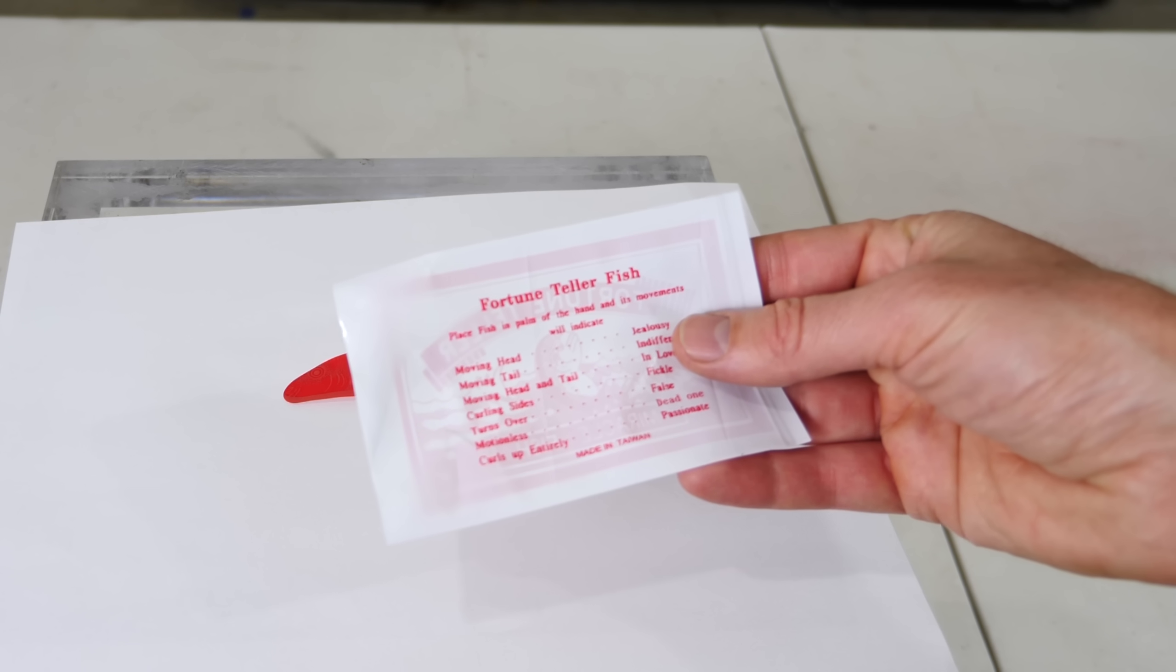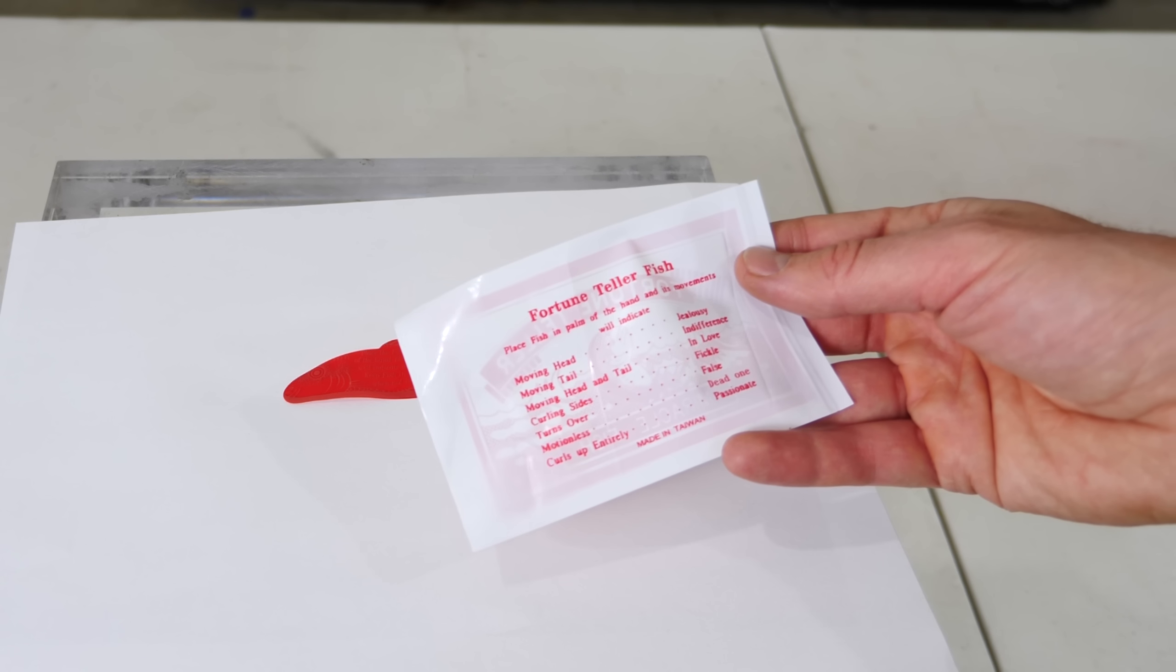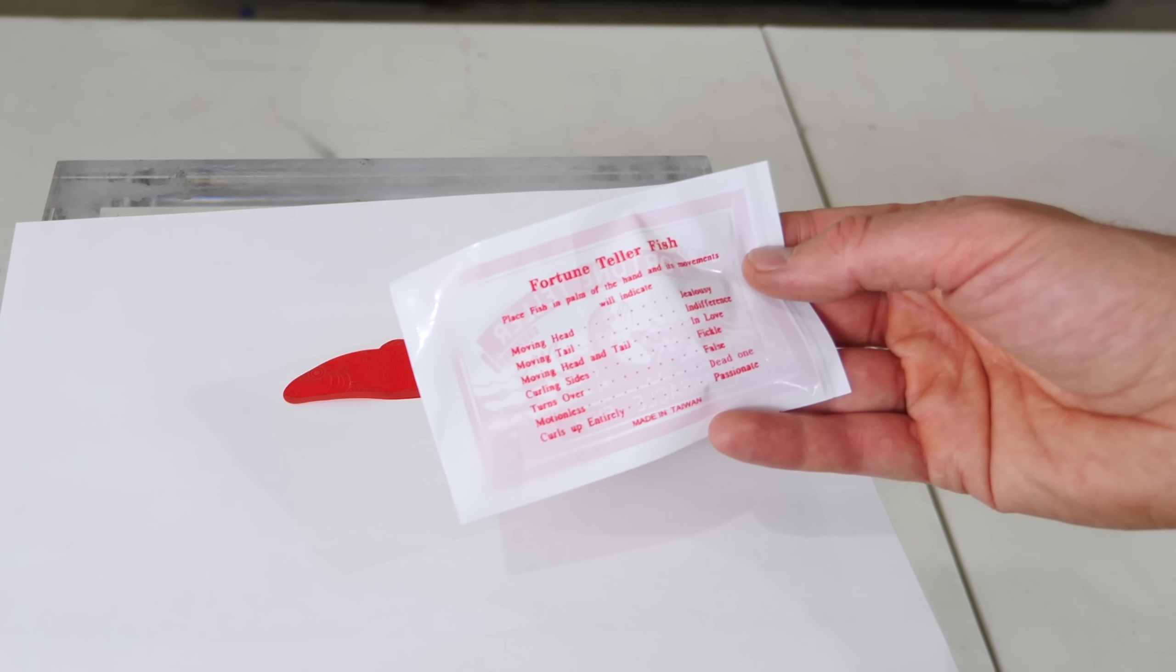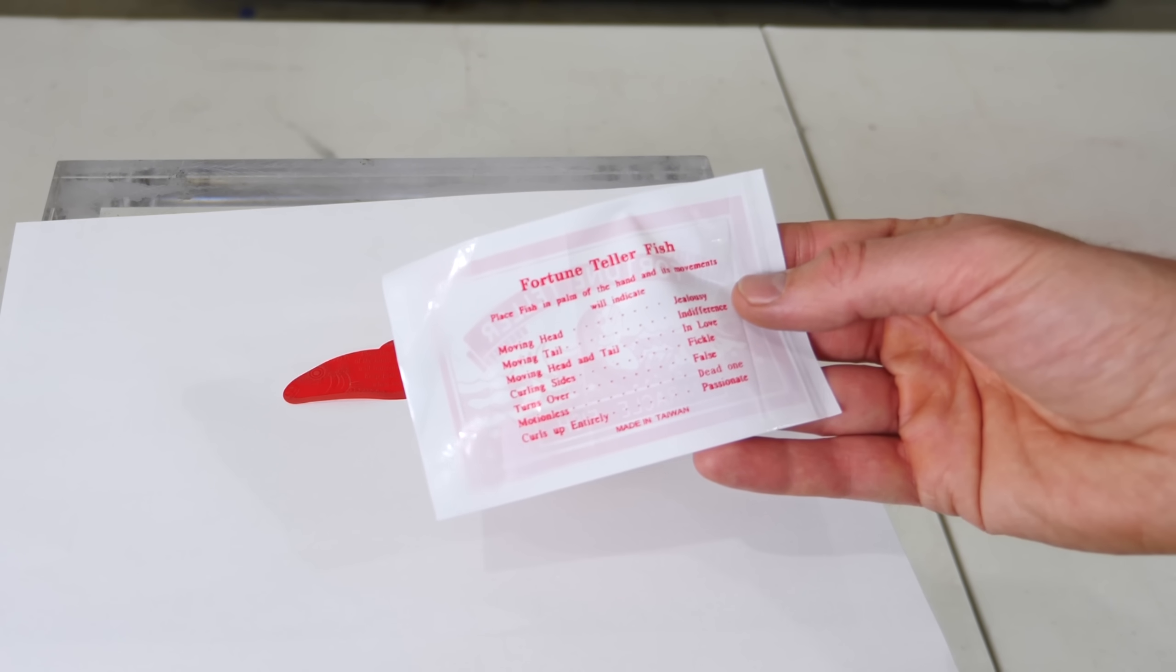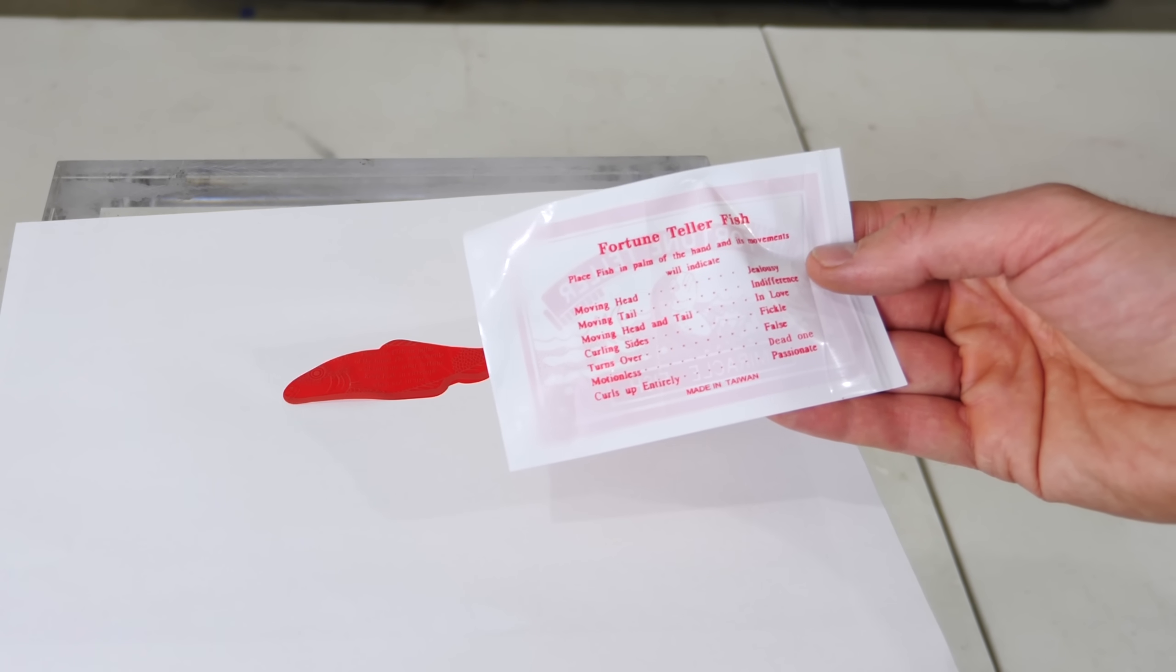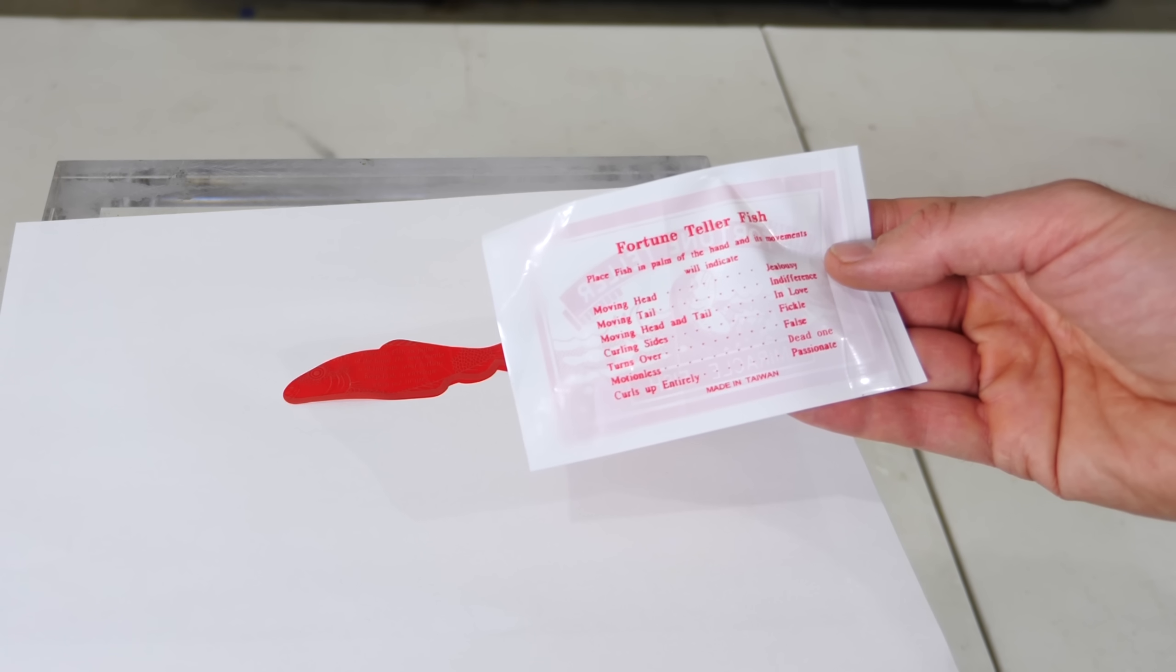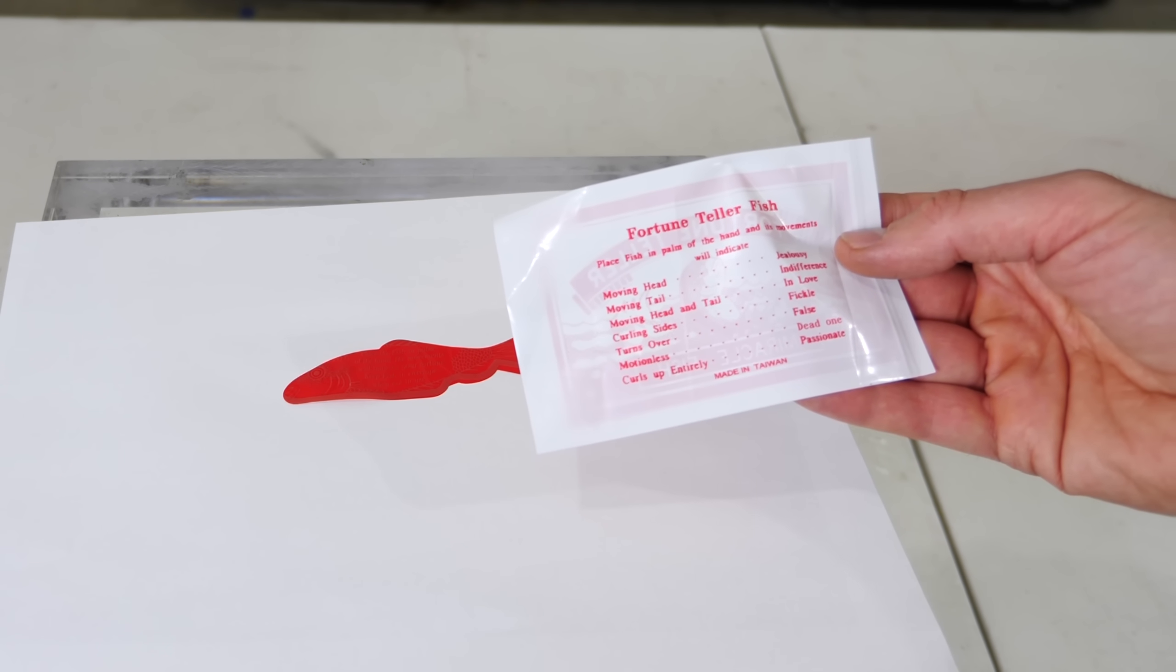Now it tells me to place the fish in the palm of my hand and its movements will indicate if it's moving its head then I'm a jealous person, if it's moving its tail I'm indifferent, if it's moving its head and tail I'm in love, if it's curling its sides I'm fickle, if it turns over I'm false. What does that mean? And if it's motionless, dead one, am I dead or the fish is dead?